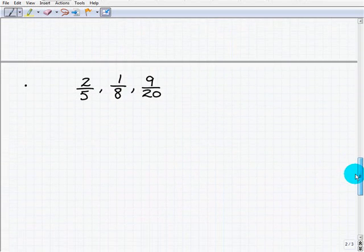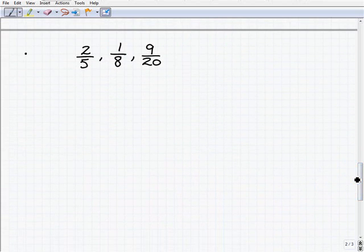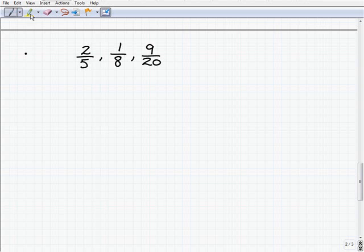So here we have, just as we're practicing with LCMs, here we have 3 fractions, but the procedure is still the same. What we need to do is prime factor each one of these denominators to find the LCMs. So let's go ahead and do that. We have 5, 8, and 20. So go ahead and prime factor each.